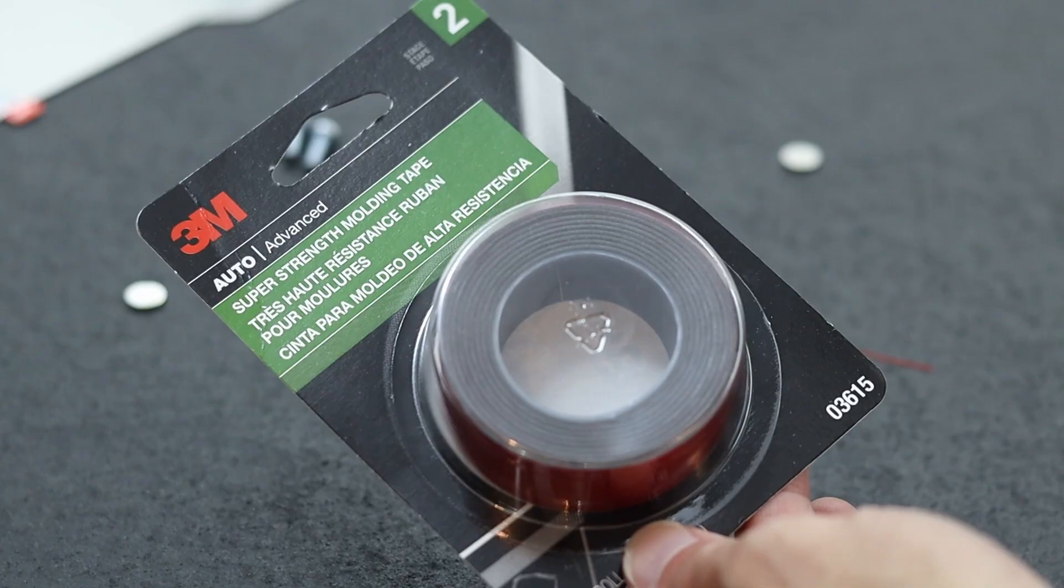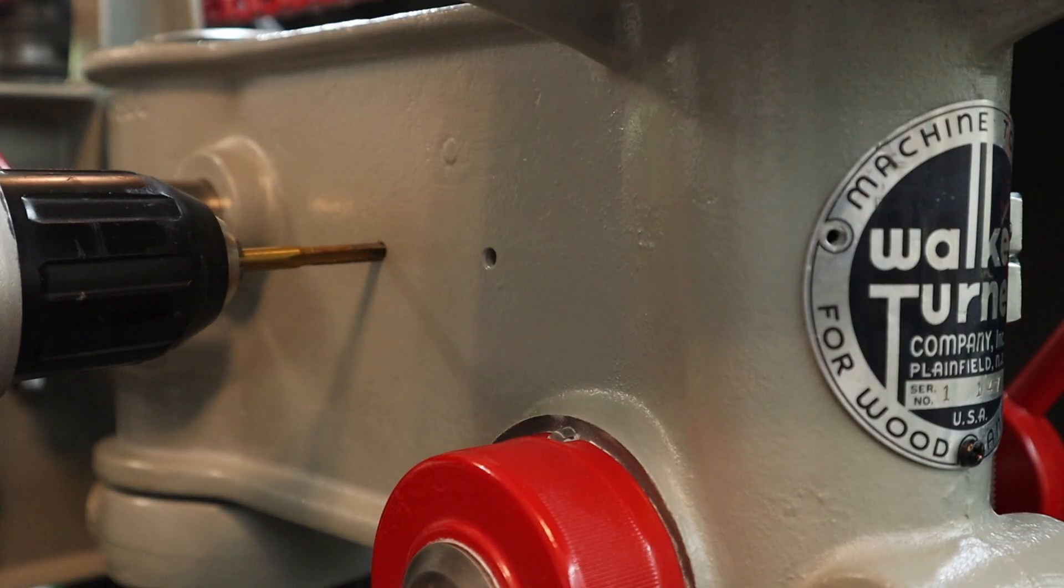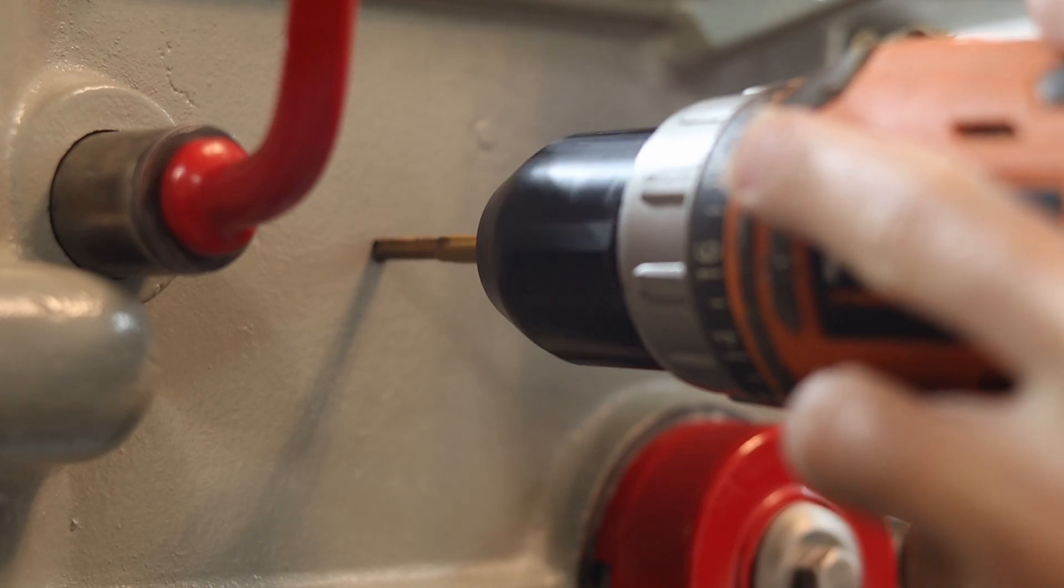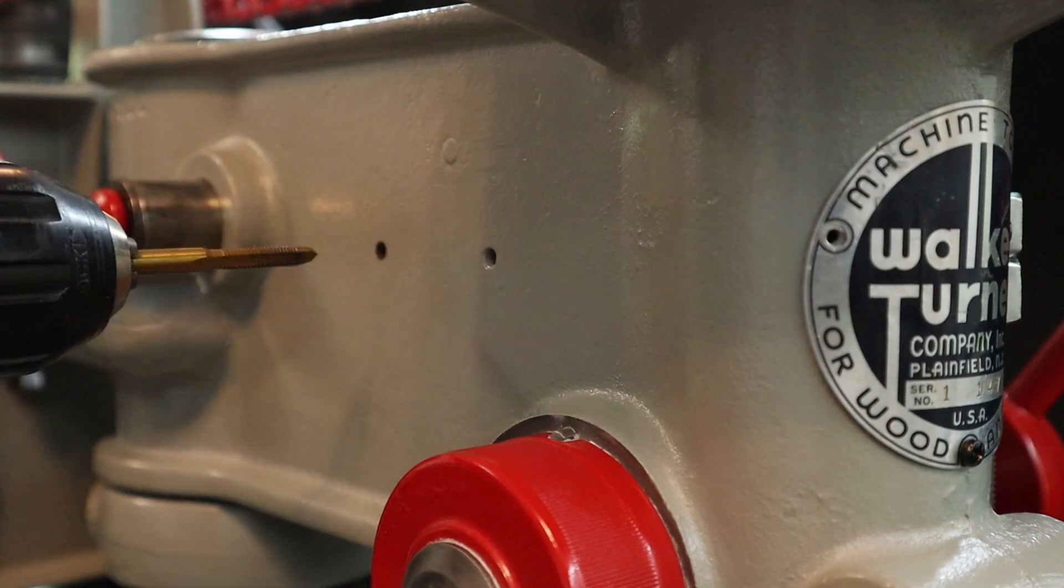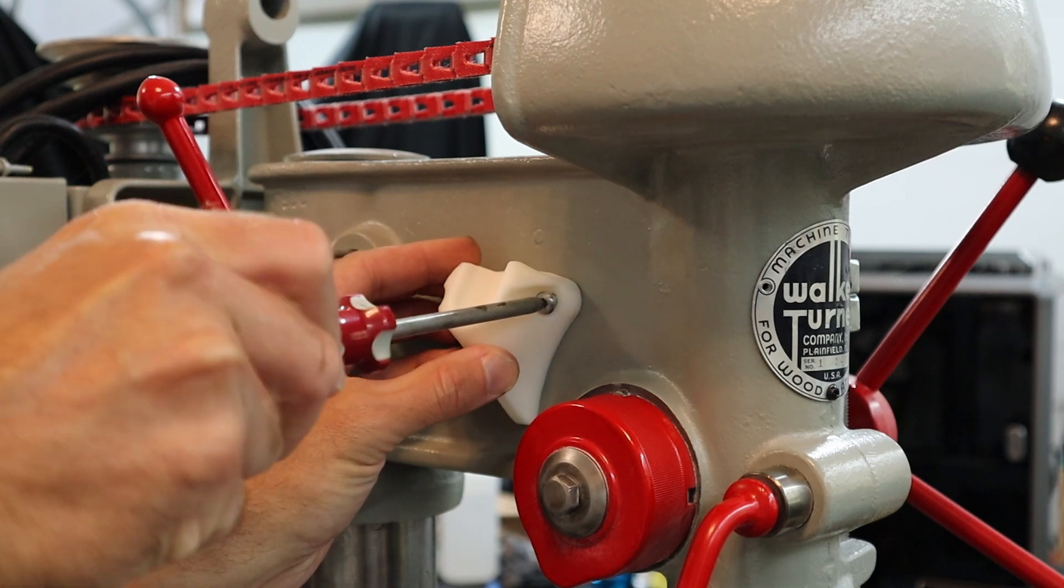Now I could mount this anywhere on the drill press with double-sided tape, but I have these two holes already and I like this position a lot, so I'll just re-tap the holes and then I can just find some bolts to fasten it on. So let's get this mounted and see how well it works.